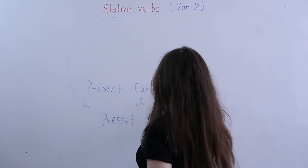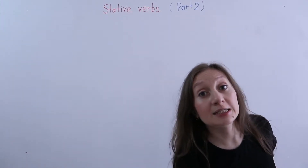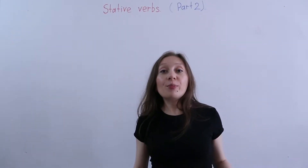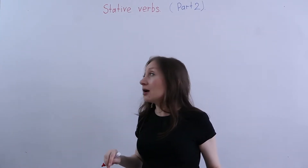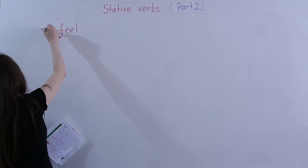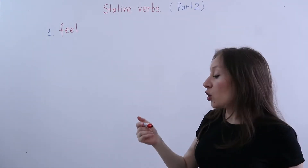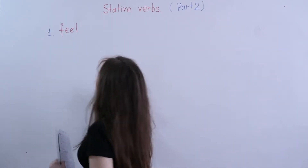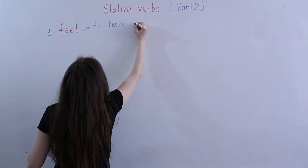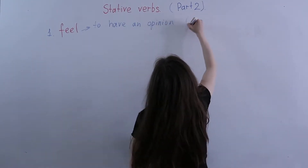So what are these verbs? They are verbs like feel, smell, taste, think, admire, and have. We will start with the verb 'feel.' This verb can be used in both present continuous and present simple — it depends on the meaning. If the meaning is 'to have an opinion,' we use present simple.